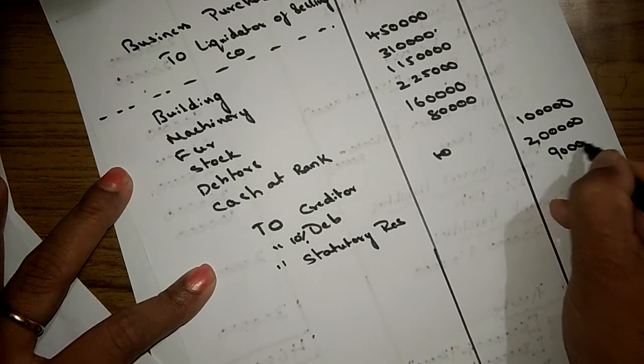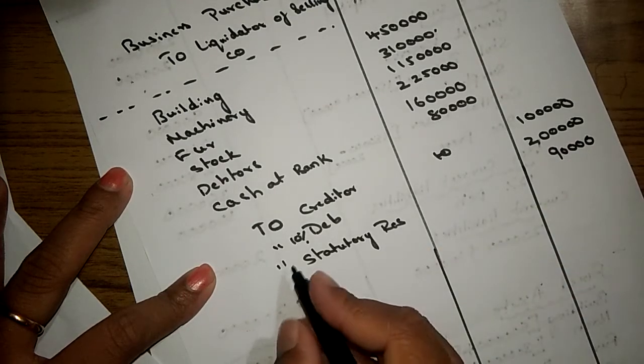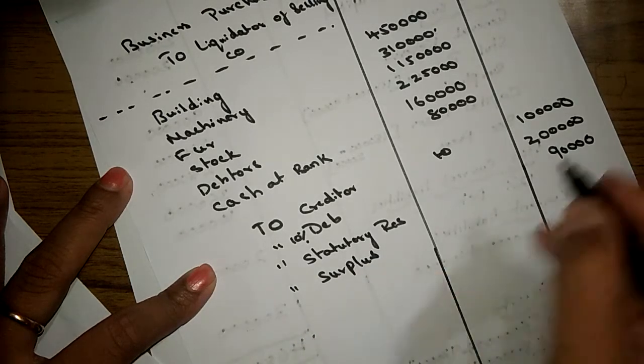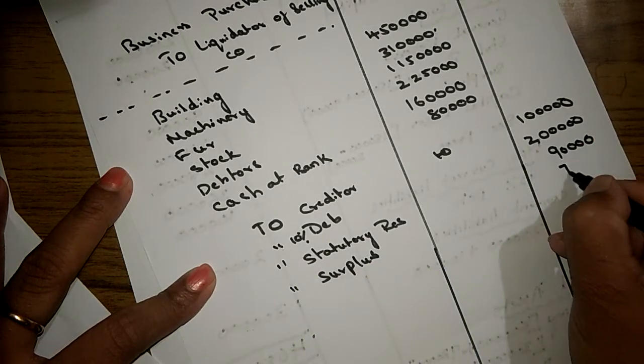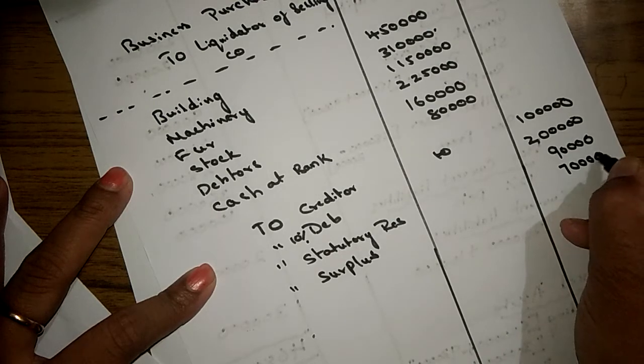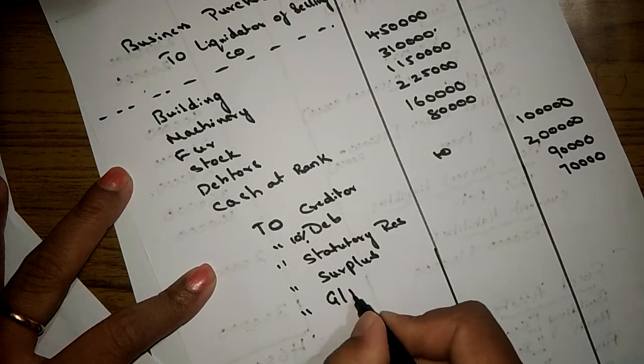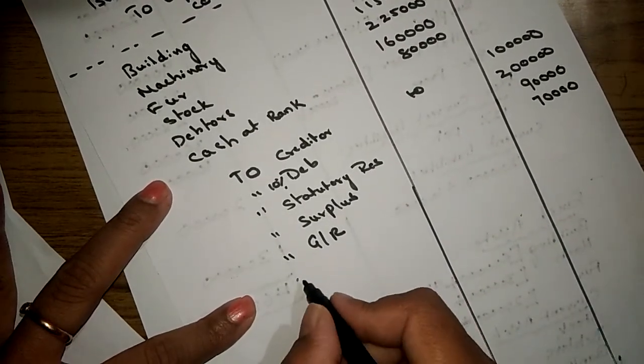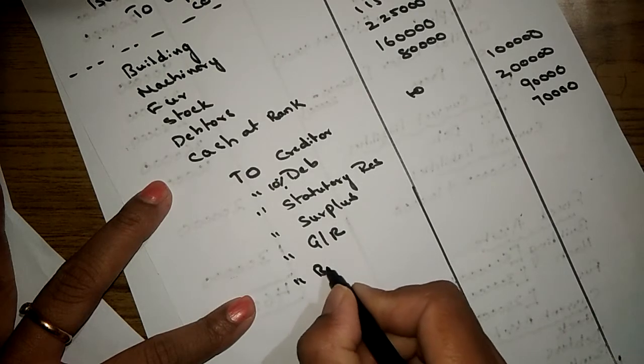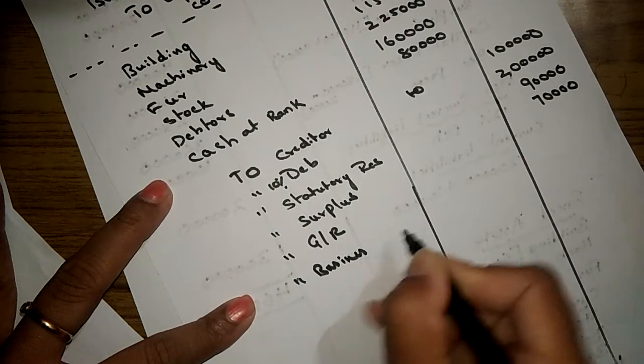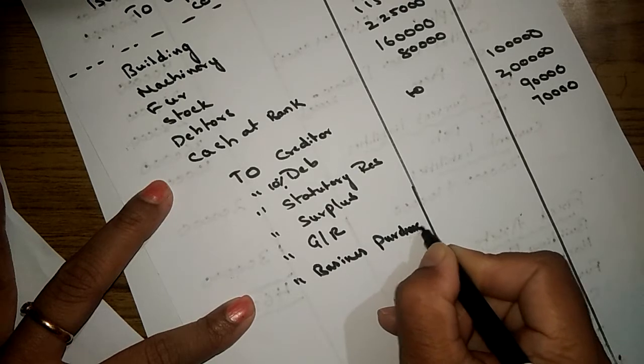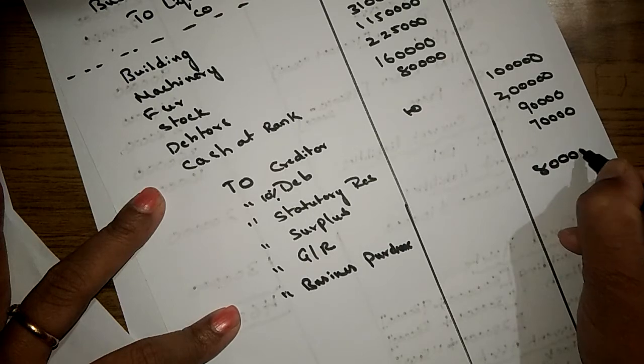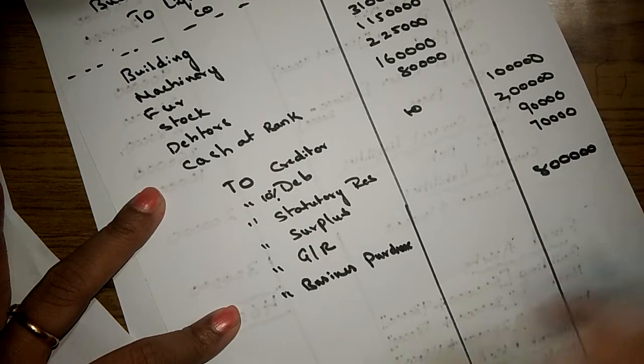To statutory reserves 1 lakh, to surplus 70,000. To business purchase 8 lakhs. Ultimately we are going to adjust the difference in general reserve.